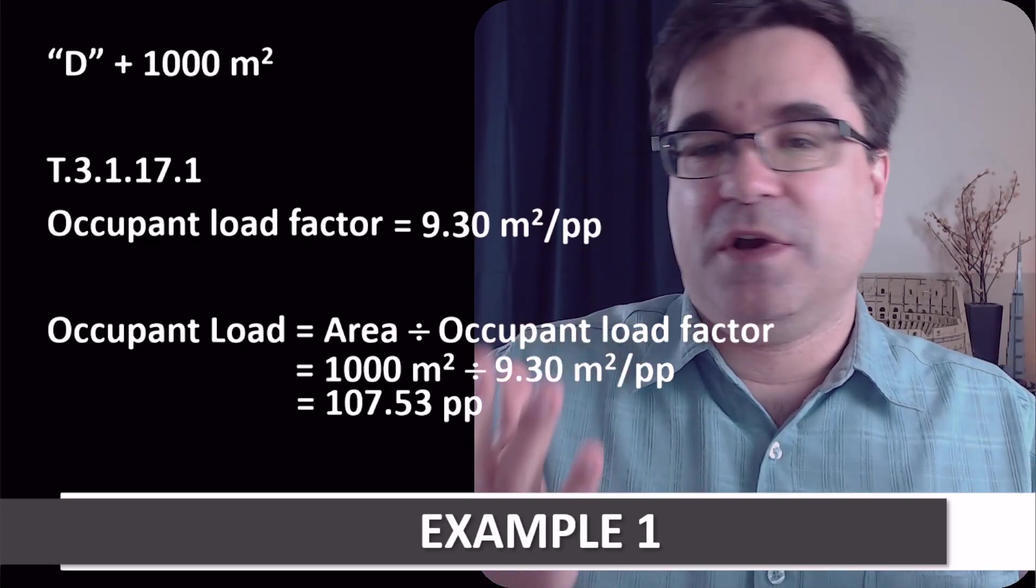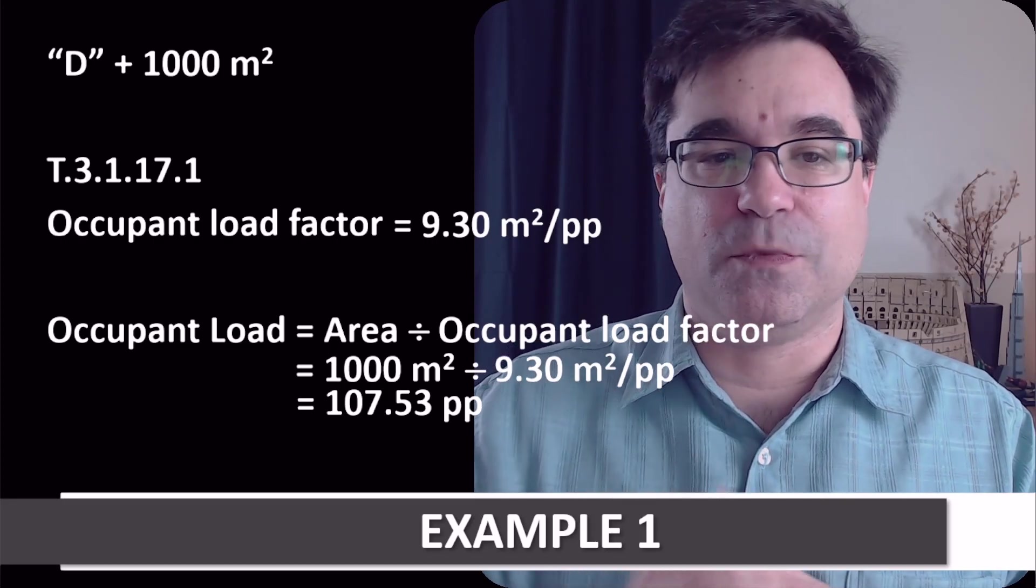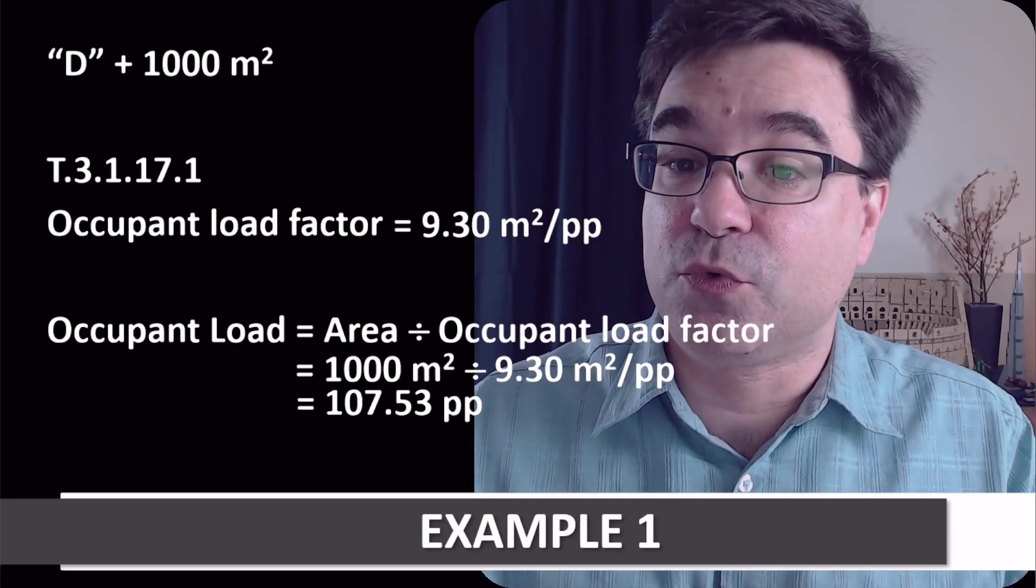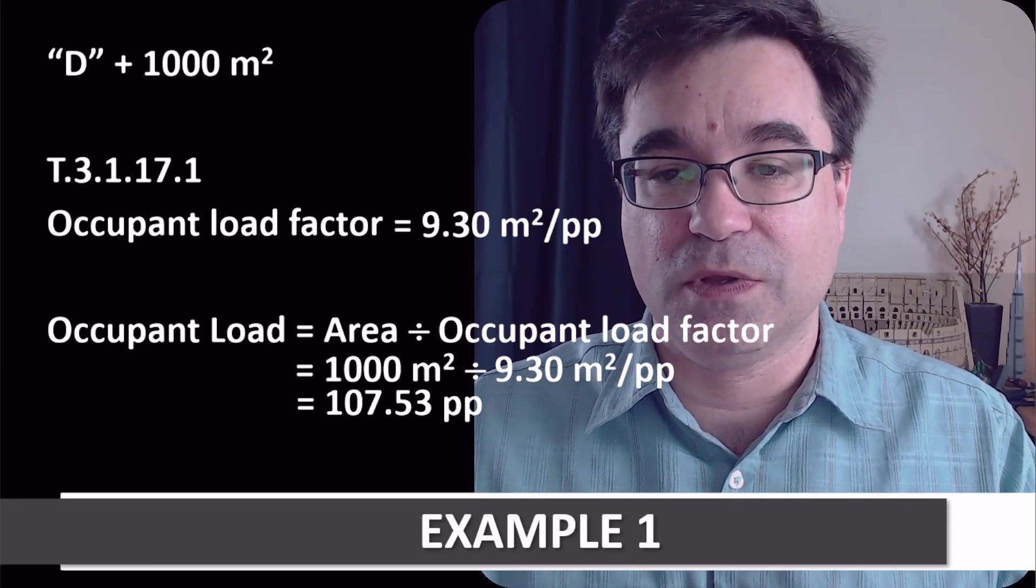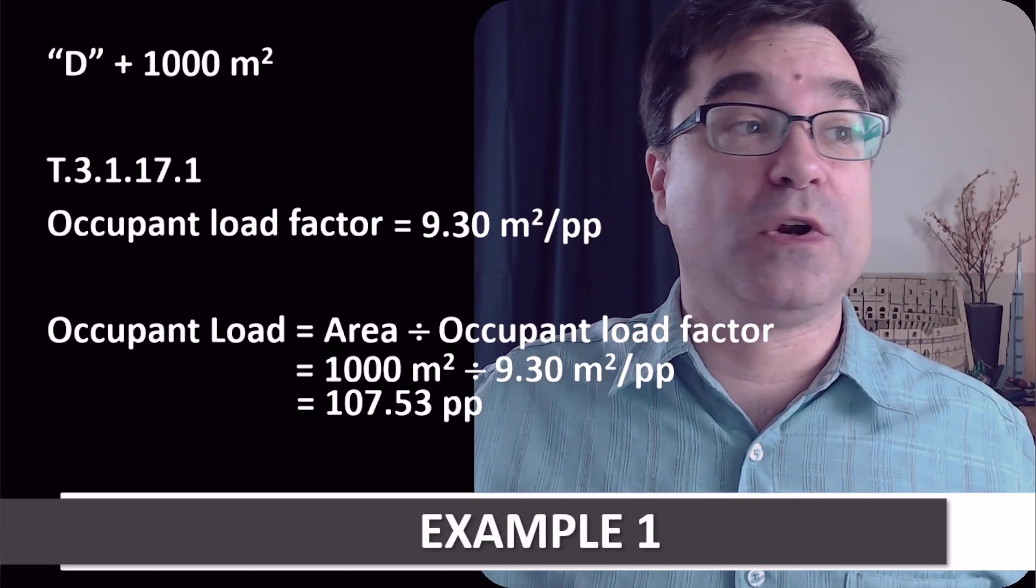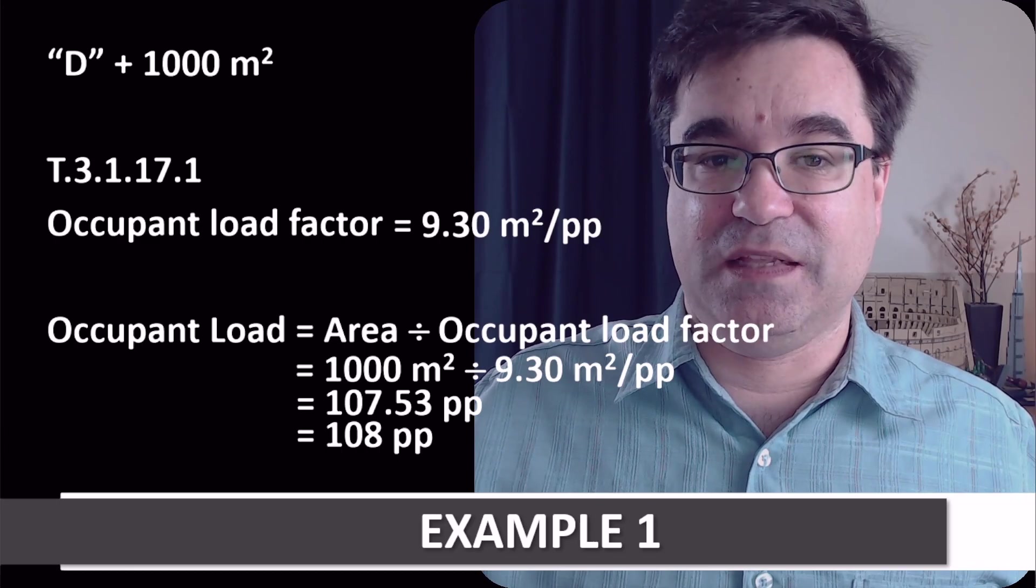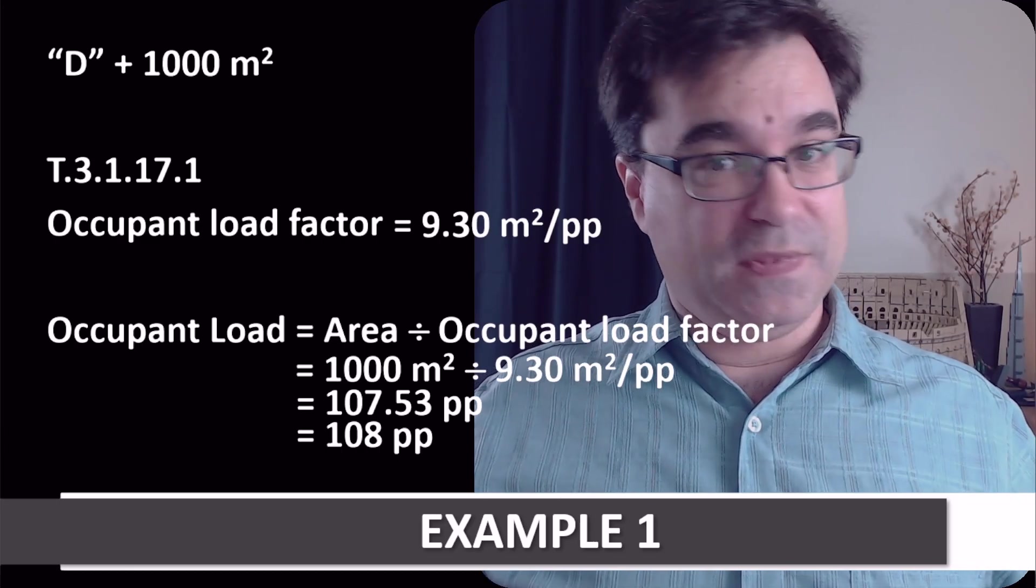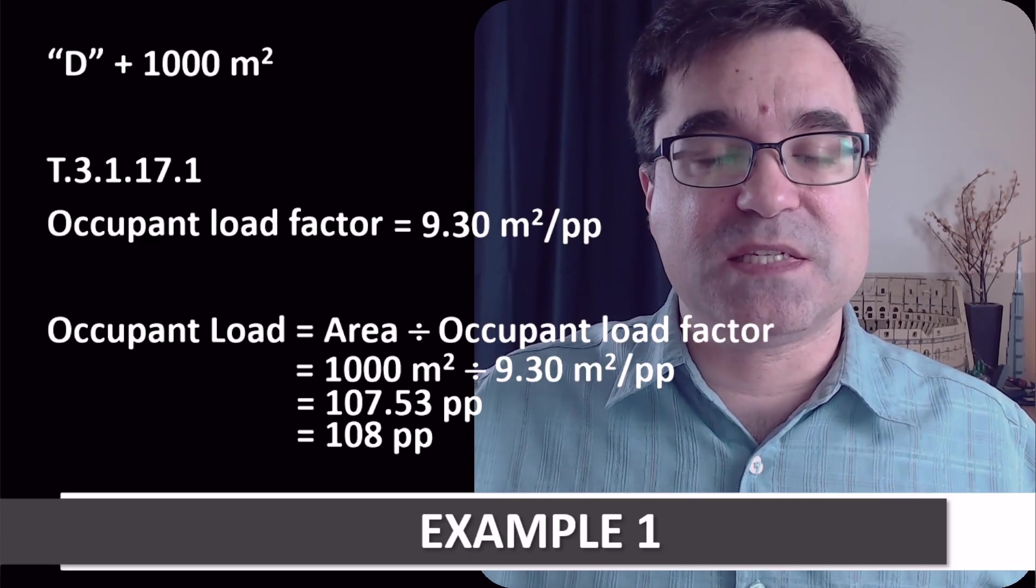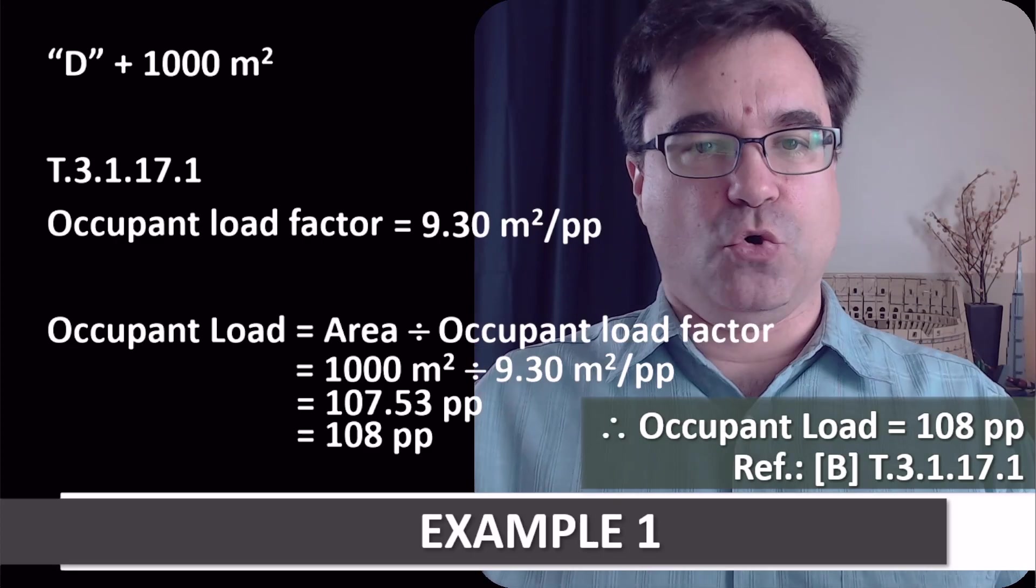So, we don't have 0.53 of a person. What this number here means is that we have more than 107 people. And the smallest whole number that is more than 107 is 108. There we go. The occupant load for 1,000 meters squared of office space is 108 people like this.